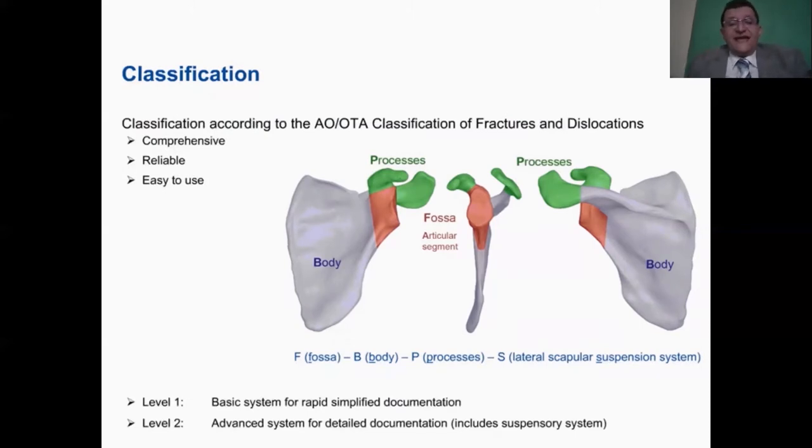There are two levels of classification, the basic system for rapid simplified documentation, which is commonly used, and a level two system, which is more detailed and documented mainly for scientific purposes.